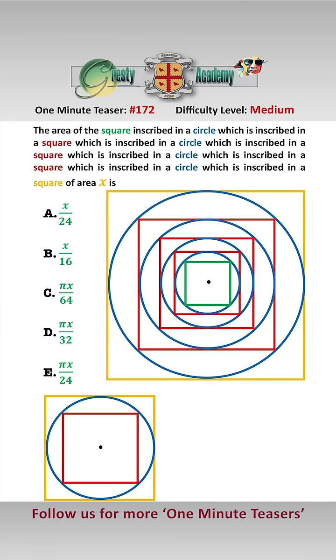So basically this question is asking if the area of the orange square is x, then what is the area of the green square?